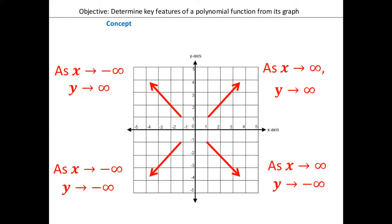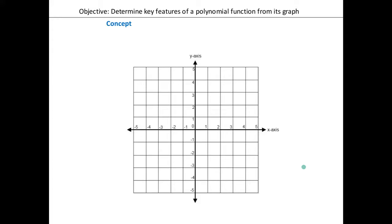So we're going to build and talk about the end behavior. Yesterday I had you guys copy the x and y chart somewhere on your notes. Find this wherever you drew it. You have your x and y chart where the x-axis — the right side goes to positive infinity. And then we have our y values going up to positive infinity, and then our y values going down to negative infinity. We're going to add on to this, so make sure you find this on your notes.